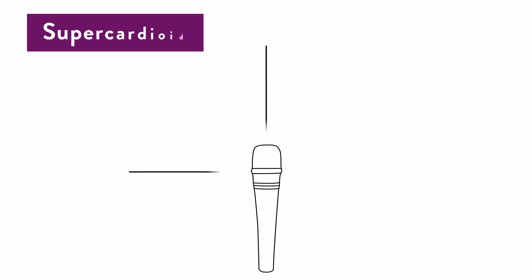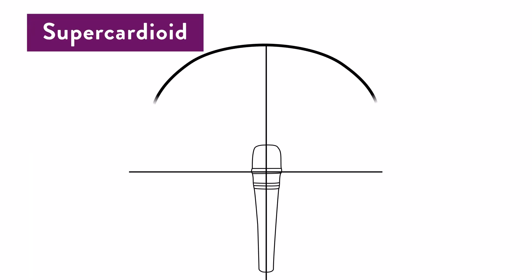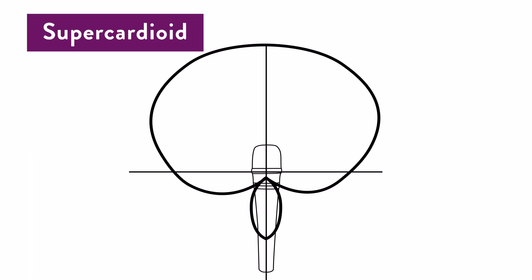The supercardioid is going to have the same application suggestions as a cardioid. It is actually more directional and picks up less audio from the sides, but you have to be aware that it can pick up some audio out of the back of the microphone.